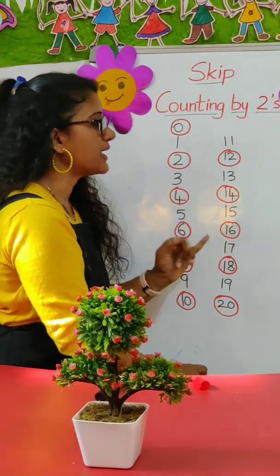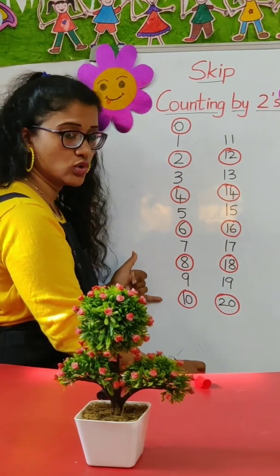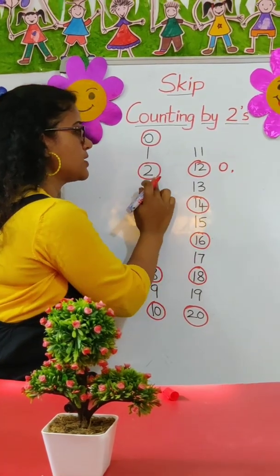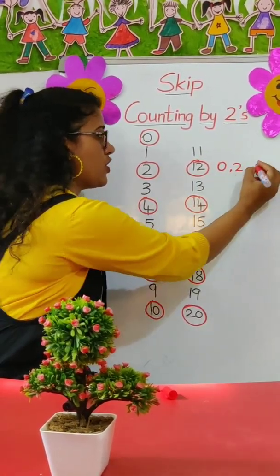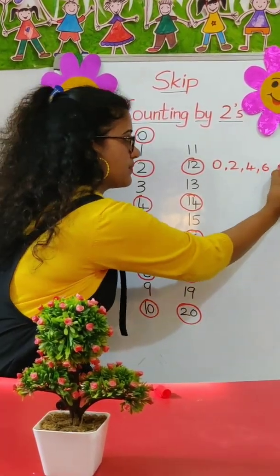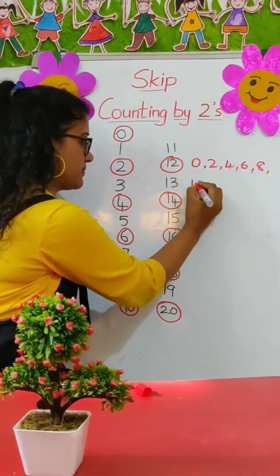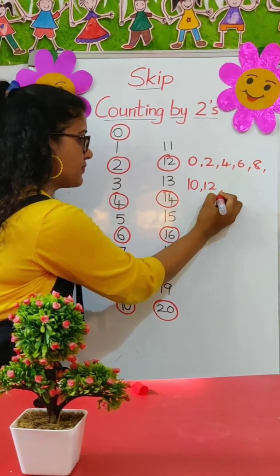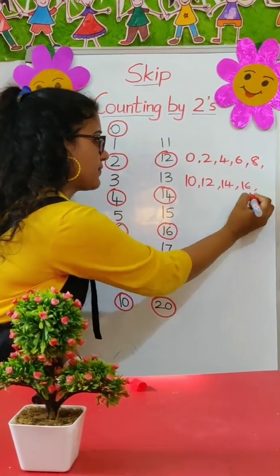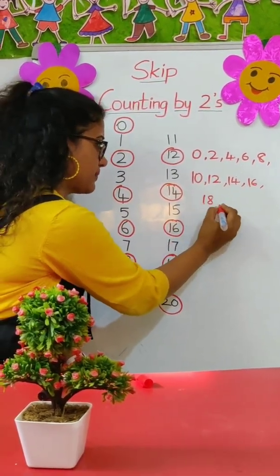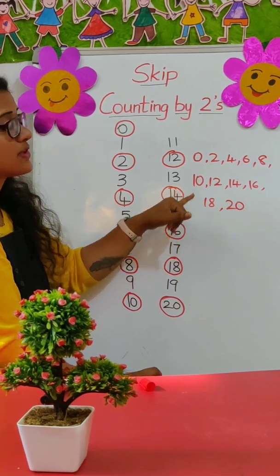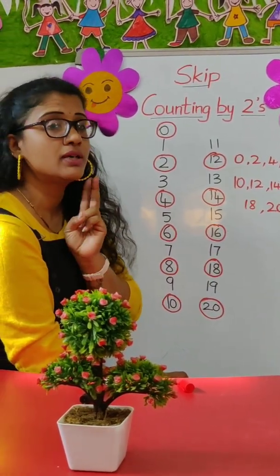Now let's write the numbers. We have skip counted by twos. Let's see: zero, two, four, six, eight, ten, twelve, fourteen, sixteen, eighteen, twenty. So these are the numbers which we got after doing skip counting by number two.